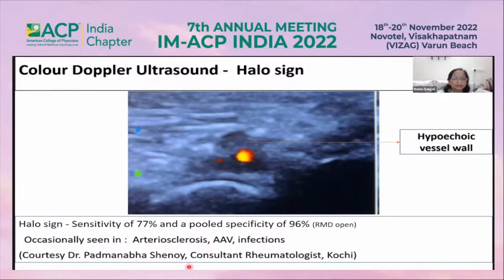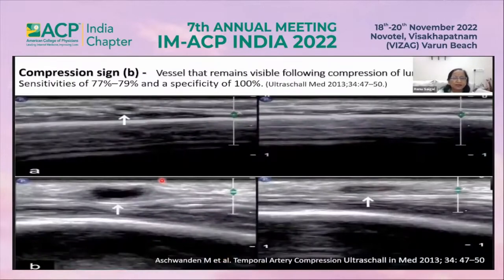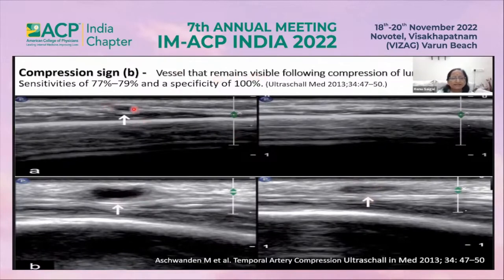This image is courtesy of Dr. Shinoye from Kochi. The compression sign: if we compress the temporal artery of a patient with giant cell arteritis, we can still visualize the lumen despite pressure from the transducer. If the lumen persists under compression, that is the compression sign, with a specificity of 100%.